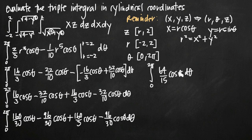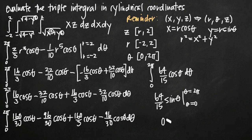Evaluating the final integral with respect to theta: integrating 64 over 15 cosine theta gives 64 over 15 times sine theta, evaluated from theta equals 0 to theta equals 2 pi. Plugging in 2 pi: sine of 2 pi is 0, so that term is 0. Plugging in 0: sine of 0 is also 0. So we get 0 minus 0, and our final answer is 0. That's how you convert a triple integral from Cartesian to cylindrical coordinates and then evaluate it.